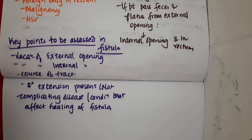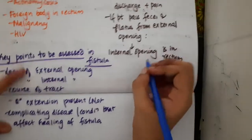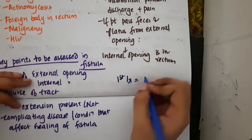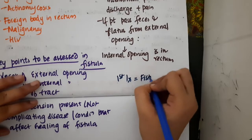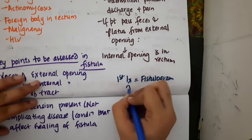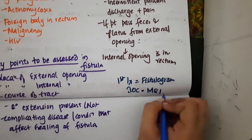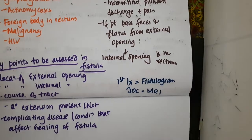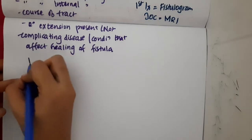The first investigation done is a fistulogram. The investigation of choice for anorectal fistula is MRI.